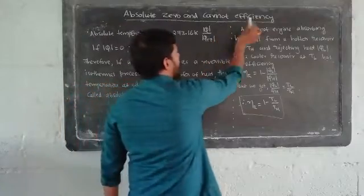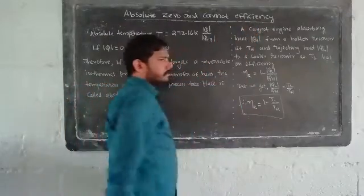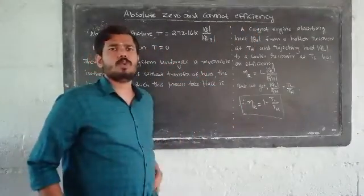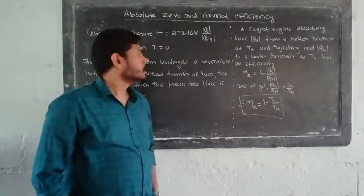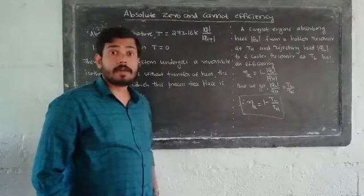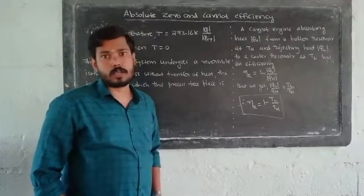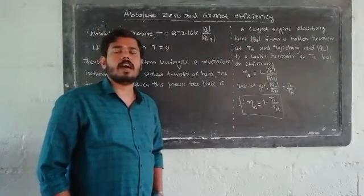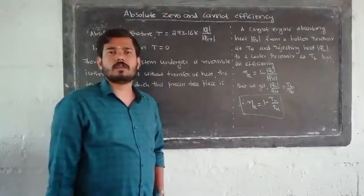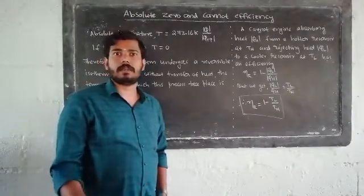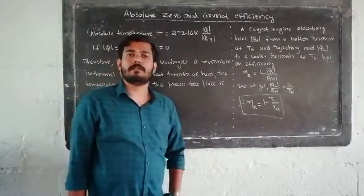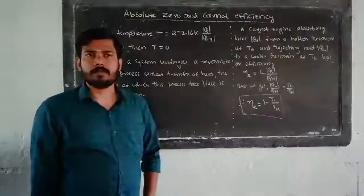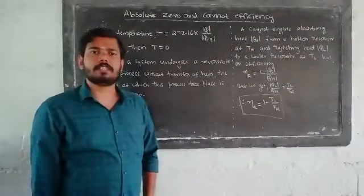Next, we call the Carnot efficiency. That is 1 minus QL by QH. TL is the low temperature and TH is the high temperature.